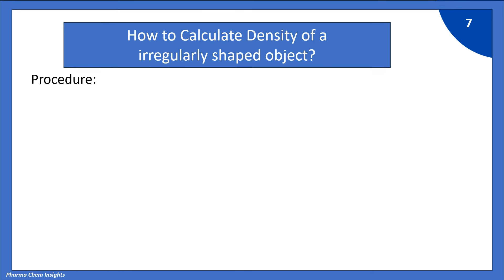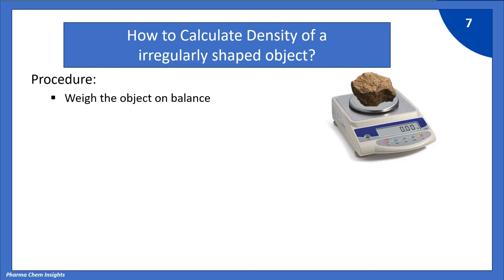Now, let us see how to calculate density of an irregularly shaped object. Procedure. First, weigh that irregular object on balance. Mass is 50.25 g.